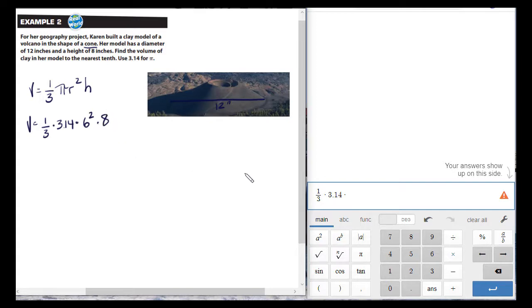So if I want to find the volume of this, I just need to come over here to the calculator, and I'm going to add 6 squared times 8. That's my height, and the volume of this is 301.4 cubic inches, inches cubed, and that's how big the volcano is.